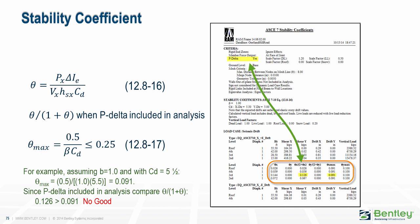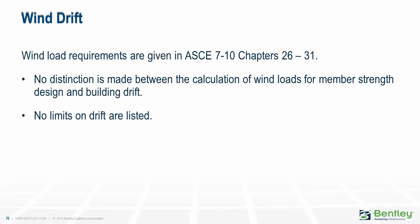Enough about seismic drift — let's now turn our attention to wind drift. Wind load requirements are given in ASCE 7, chapters 26 through 31. Unlike the seismic requirements, no distinction is made between the calculation of wind loads for member strength design and that of building drift. Furthermore, no limits on drift are listed in the code. Different design offices use different limits. Some use a different design wind for strength design than for drift analysis — generally a lesser wind — with the explanation that those are the winds the occupant is more likely to experience regularly. Some use factored drifts, and some use unfactored drifts, so there are wide differences in the way that wind drifts are considered.